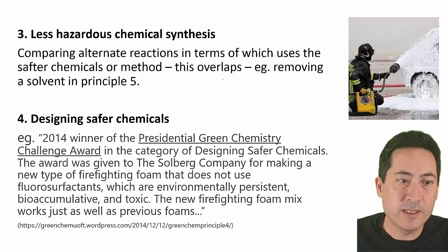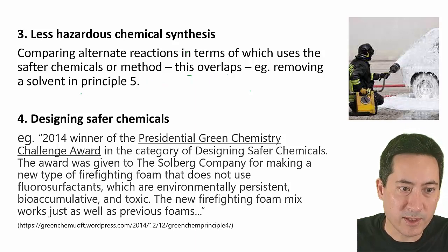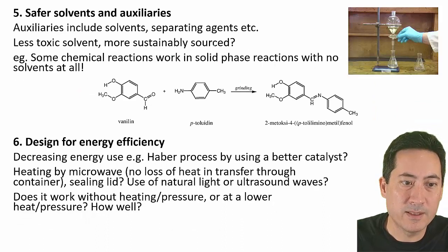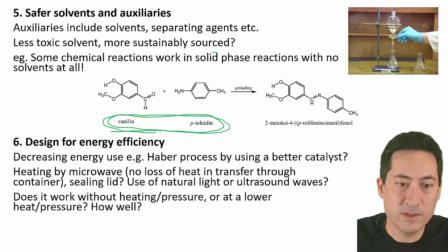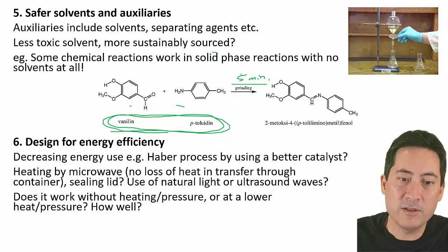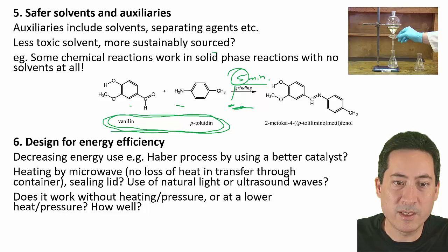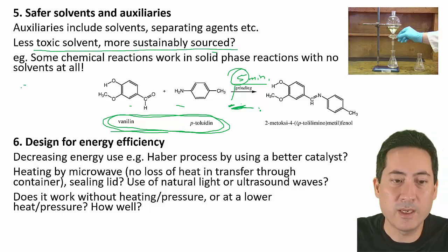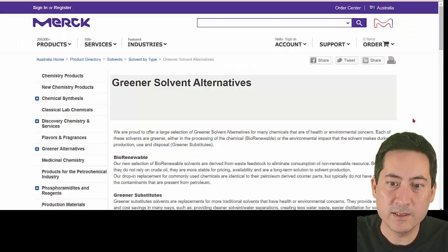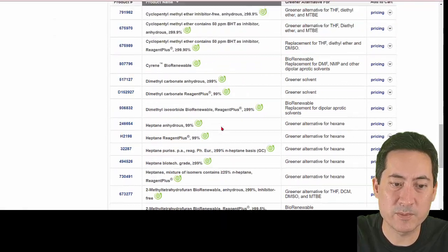Number three is using less hazardous chemicals or less hazardous synthesis reactions. This overlaps with number five — safer solvents. For example, you don't actually need a solvent for certain organic reactions; you can use the chemicals as powders, grinding for five to thirty minutes and achieving near 100% yield. You could also explore Merck's lists of safer solvents and test whether they are less toxic and sustainably sourced.